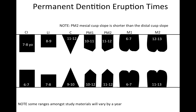Permanent dentition eruption times — a quick word about the drawing: pay special attention to the premolars. The cusps on the first premolar are drawn equal in length, but on the second premolar I purposely made them uneven to remind you that the second premolar's mesial cusp slope is shorter than the distal cusp slope — that's the exception. Also note that eruption time ranges may vary among study materials by about a year, but this is the way I recommend studying it.